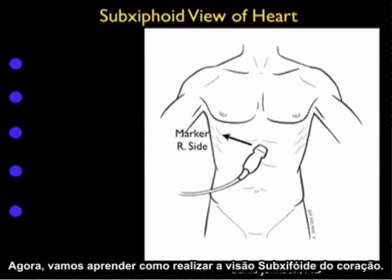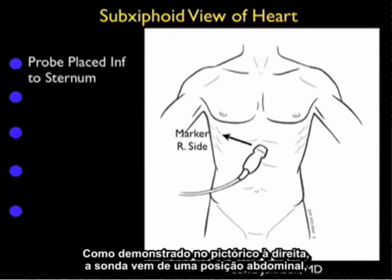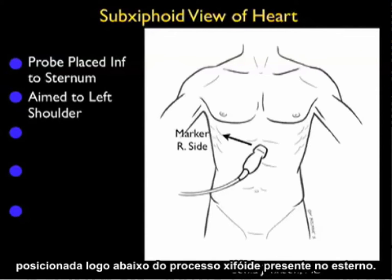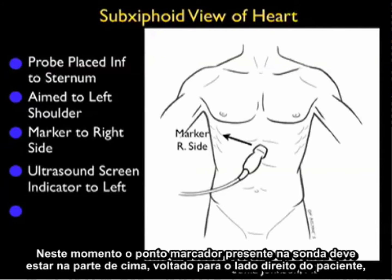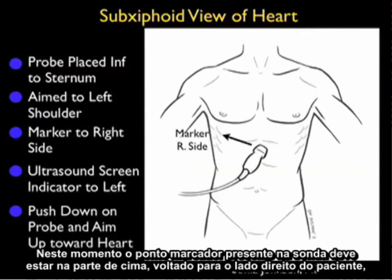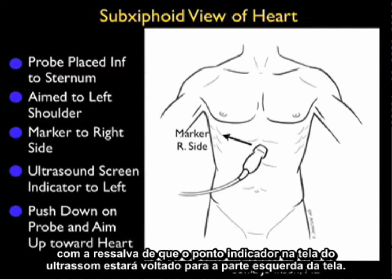Now let's learn how to perform the subxiphoid view of the heart. As shown in the pictorial to the right, the probe is coming from an abdominal position placed just inferior to the xiphoid tip of the sternum. It's important to lay the probe flat and push down and under the sternum, aiming towards the patient's left shoulder. The marker dot on the probe should be over towards the patient's right side, with the caveat that the ultrasound screen indicator dot is over towards the left of the screen.